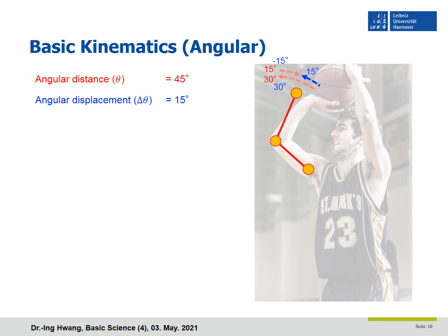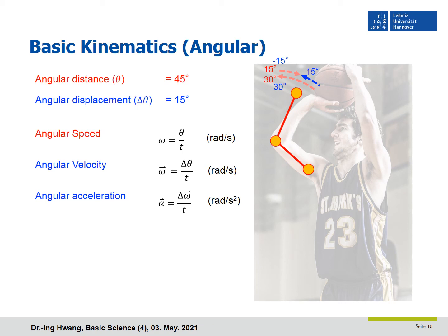Just as in linear kinematics, there are also angular speed and angular velocity. Angular speed omega tells how fast the angular distance changes — that is theta over time. Angular velocity omega tells how fast the angular displacement changes — delta theta over time. Angular velocity is a vector quantity, indicated by an arrow on top, but angular speed is a scalar quantity. The SI units of both are radians per second. In terms of angular acceleration, alpha is how fast the angular velocity changes — delta omega over time. As angular velocity is a vector, angular acceleration is also a vector quantity. Its SI units are radians per second squared.